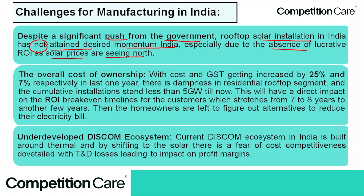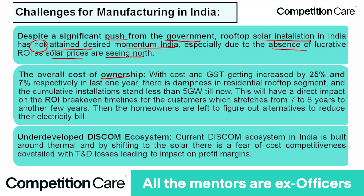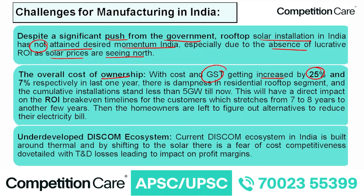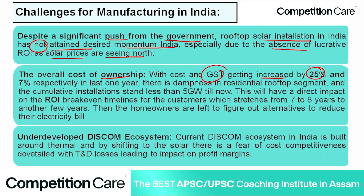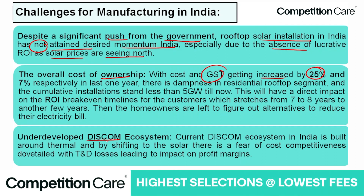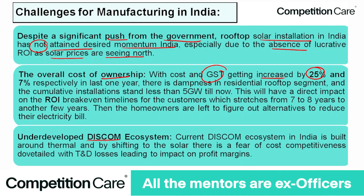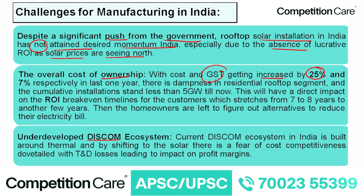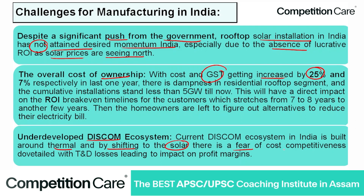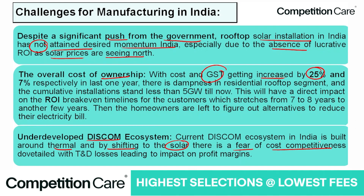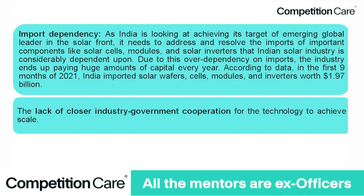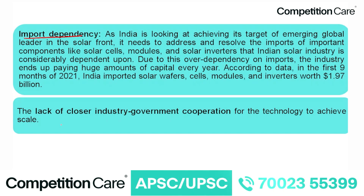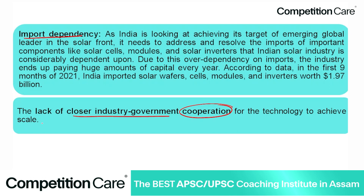The overall cost of ownership, with costs and GST getting increased, makes the return on investment unfavorable. There is also an underdeveloped DISCOM ecosystem — the current DISCOM ecosystem is built around thermal energy, and by shifting to solar there is fear of cost competitiveness and complexity. Additionally, there is significant import dependency and a lack of close industry-government cooperation for technology to achieve the required scale.